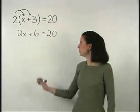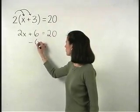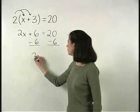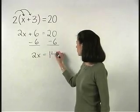Solving from here, we subtract 6 from both sides of the equation, and we have 2x equals 14.